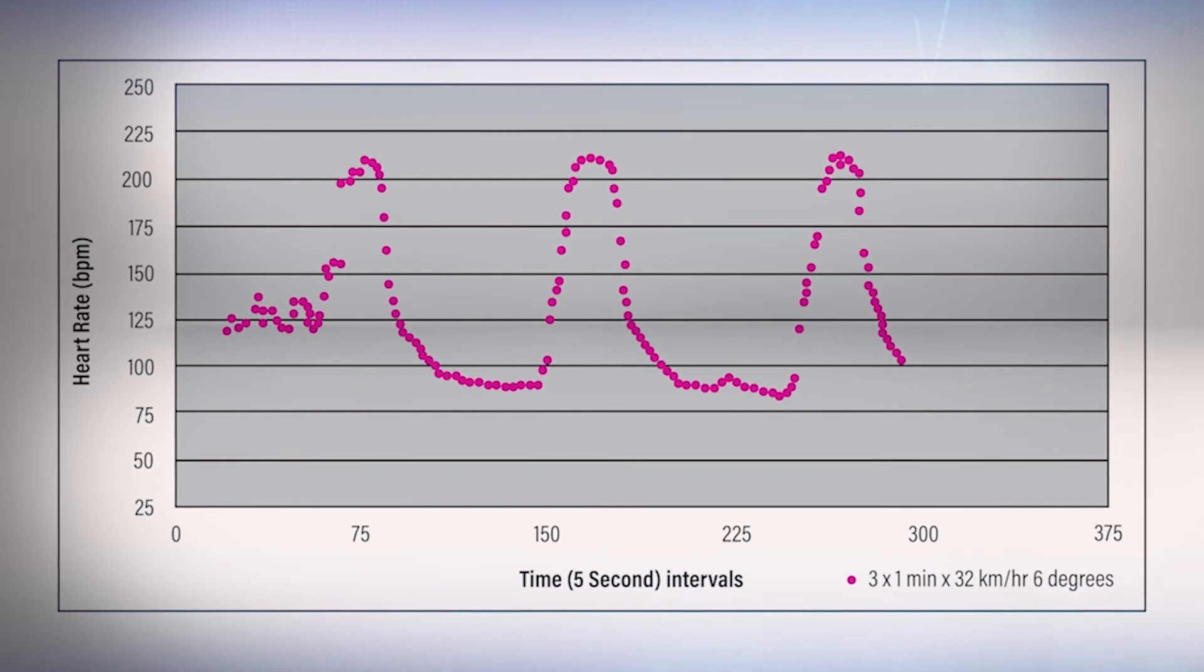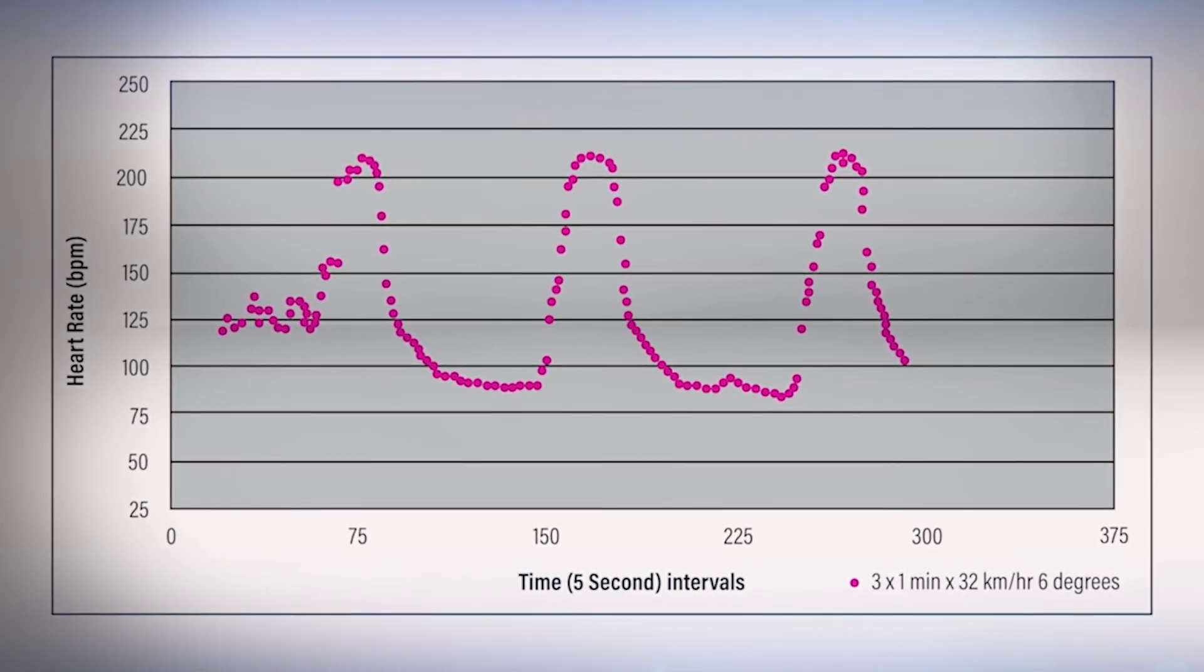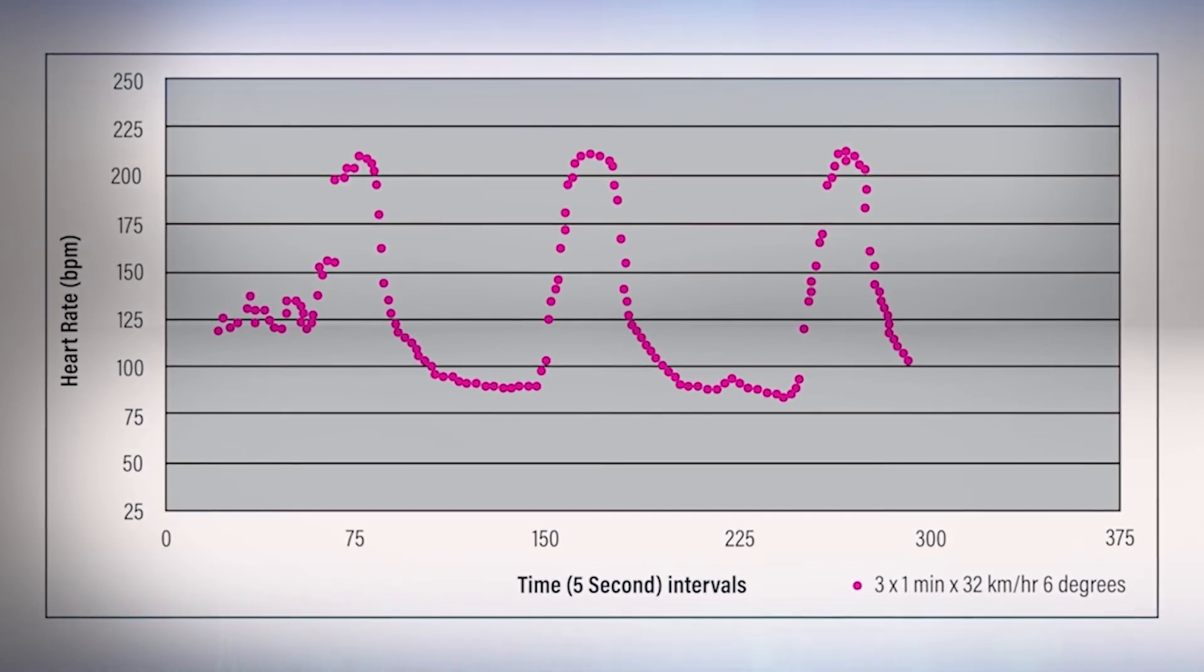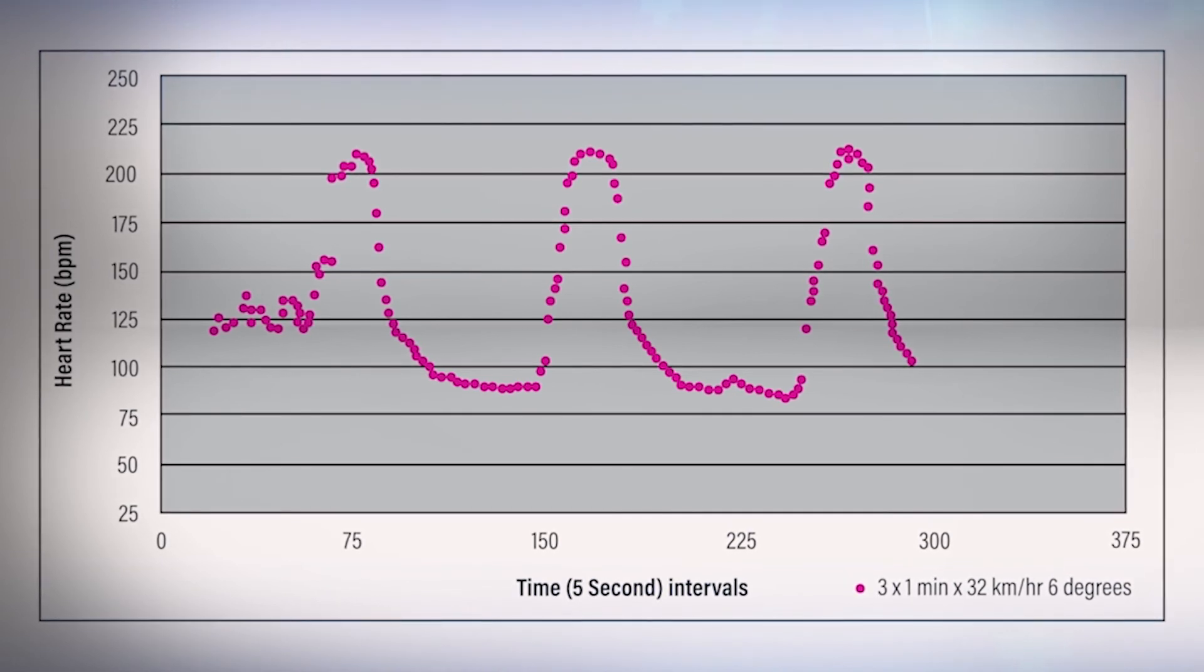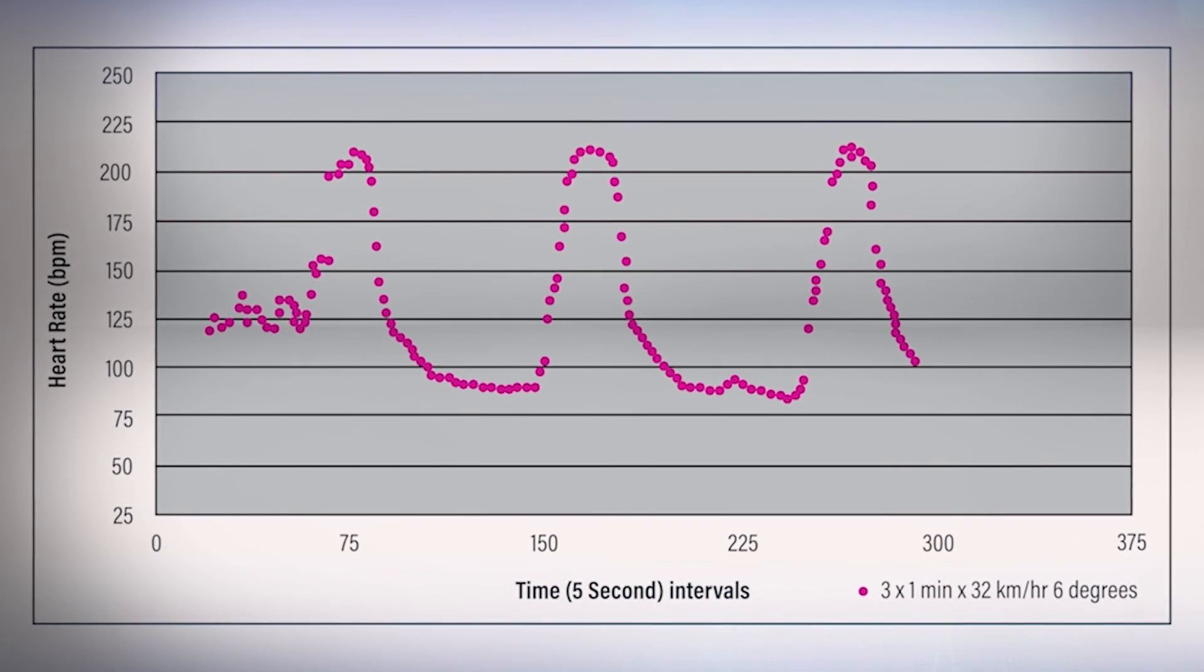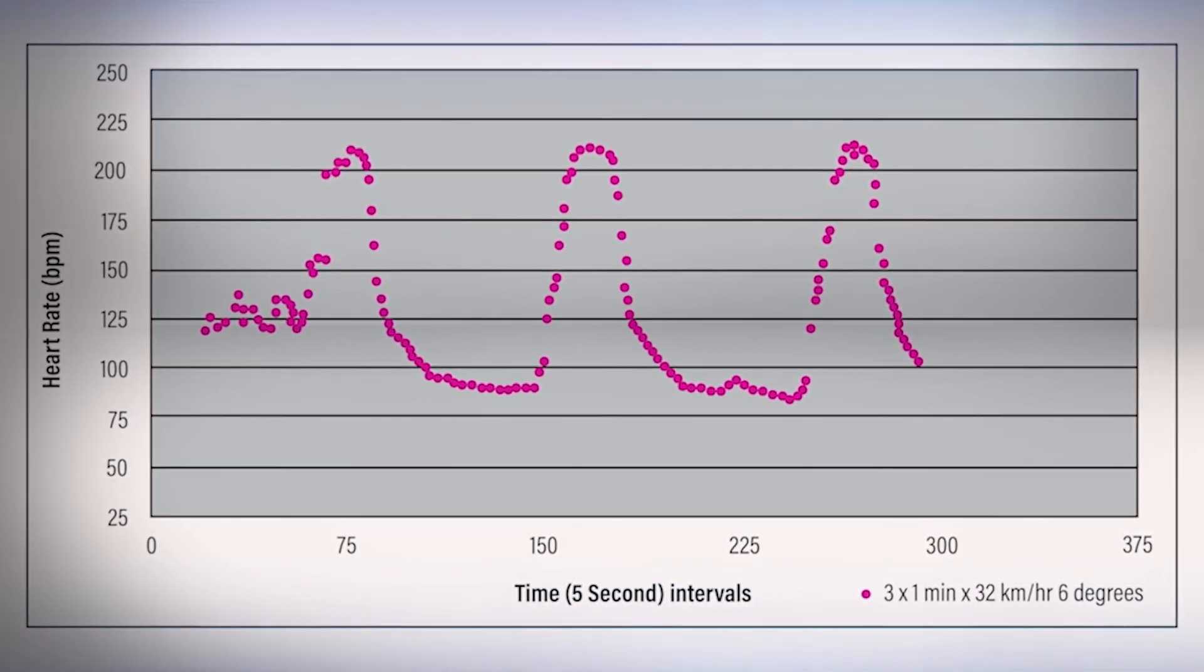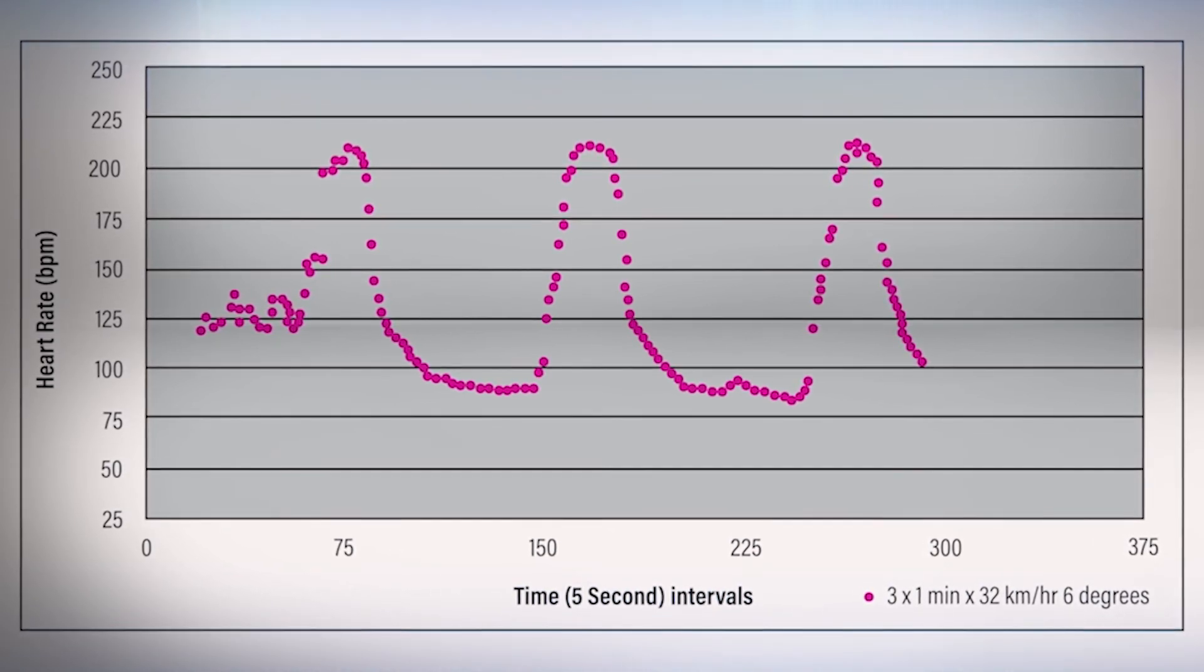Right down below that 100 beats per minute, indicating that the horse is coping with the exercise. Then it plateaus out, and then the beginning of the next one-minute gallop again increases dramatically, levels out, and then in the recovery again it drops below that 100 beats per minute. Again indicating the horse is coping well with the exercise, and then in the third and final gallop is the same pattern.